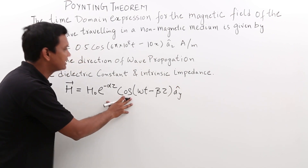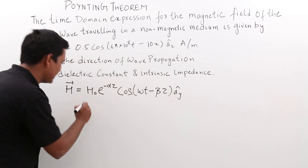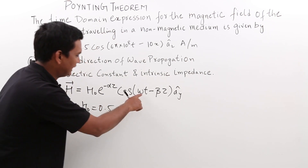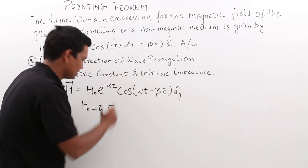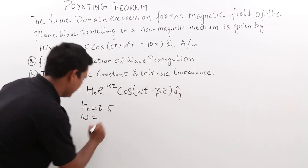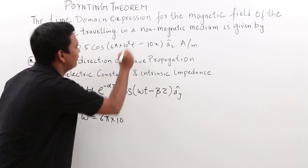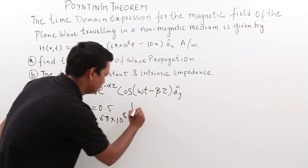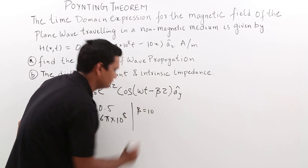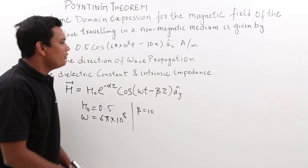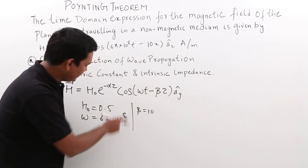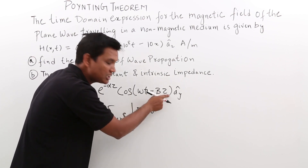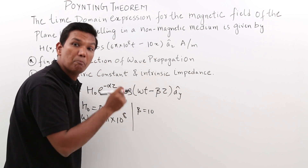Comparing these two equations, I can conclude: H₀ = 0.5, ω = 6π × 10⁸, and β = 10. Now, observing the standard wave equation, when it is minus βz, it is propagating in the plus z direction.